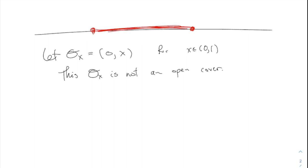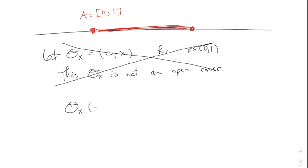If you wanted to modify this to make it work for the closed interval A equals [0,1], maybe I'll make the starting point and ending point different. How about O-X equals the interval from negative one-half to X plus one-half? That way they stretch out a little bit over the left and right sides and would pick up those two points on the end. Again for X in (0,1). Does this have a finite subcover?